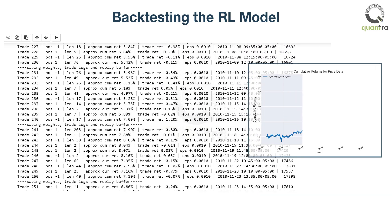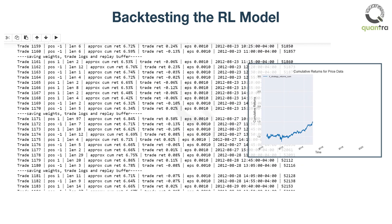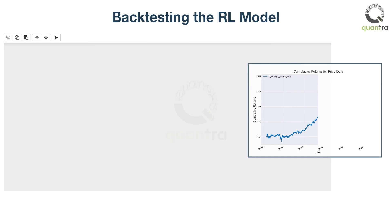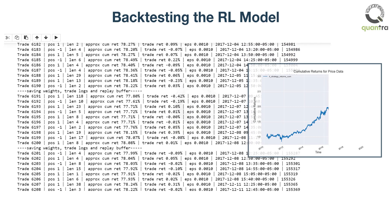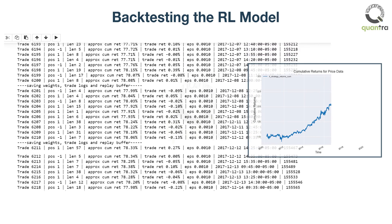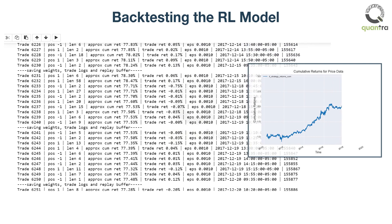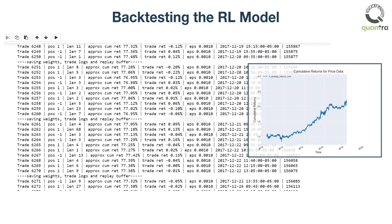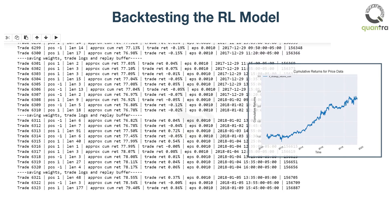As it trades more and more, the neural networks are tuned and updated to make better trading decisions. After a few years, the model starts to perform well. It buys and sells depending on the price and other inputs, and generates positive returns for the majority of the time. The returns also act as the feedback or reward to update the model. Trade 6321 generated a return of 0.37% alone.